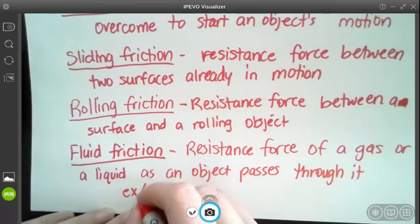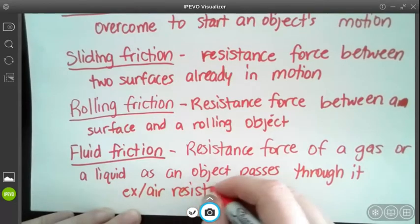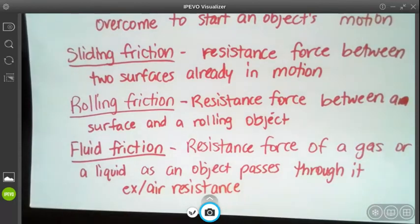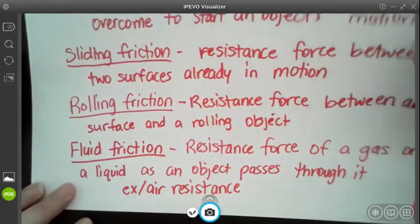And just so we have an example, air resistance is an example of fluid friction. So if you drop a sheet of paper in the air it kind of floats back and forth and that's because it's actually hitting those air molecules and it's causing a resistance and it's not just able to drop straight down.